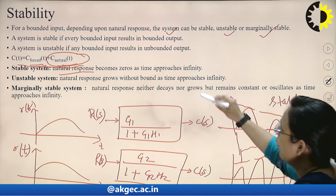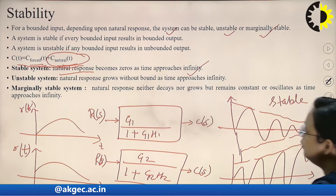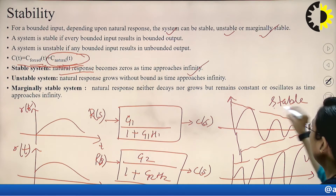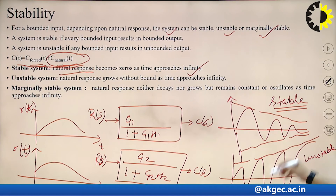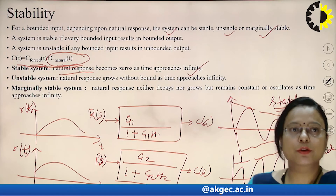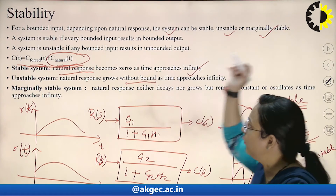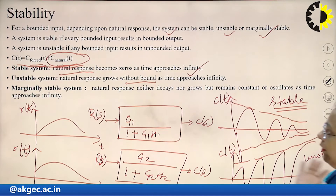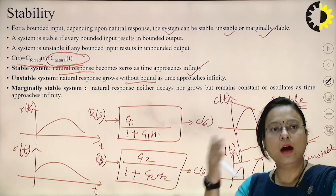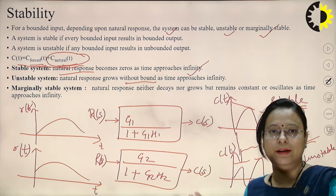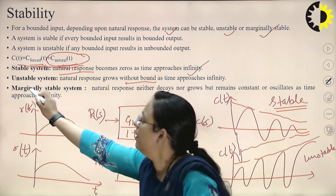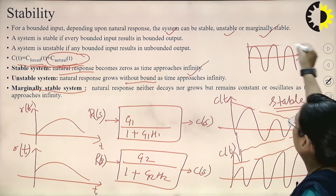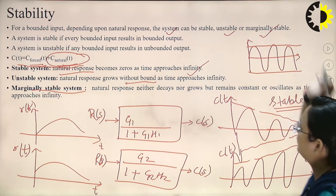To summarize: if the output becomes 0 or becomes finite when time becomes infinite, that type of system is called a stable system. When the natural response of the system grows without any bound with respect to time, that type of system is called an unstable system. When there is no decay or growth in the output — it remains constant with respect to time — then that system is called a marginally stable system.